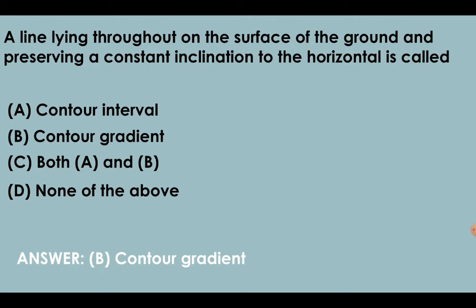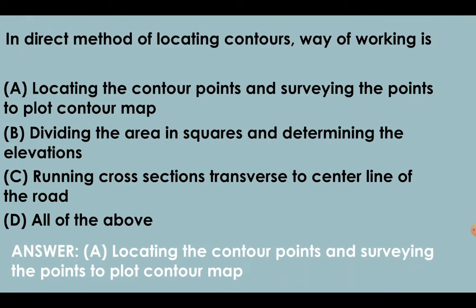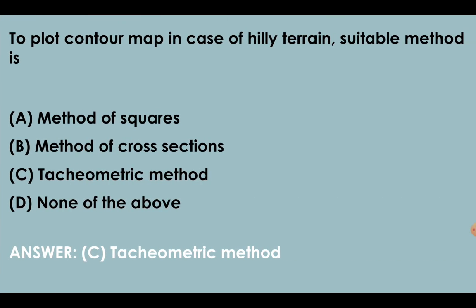A line lying throughout on the surface of the ground and preserving a constant inclination to the horizontal is called contour gradient. When higher values are inside the loop and contour lines are crossing lines at right angles, it's a ridge line. In direct method of locating contours, way of working is locating the contour points and surveying the points to plot contour map. Contour interpolation can be done by graphical method, arithmetic method, and estimation. To plot contour map in case of hilly terrain, suitable method is tachymetric method.